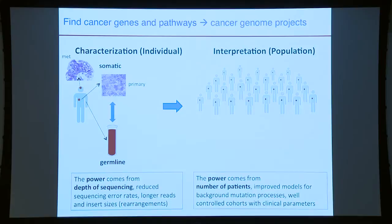Statistically, the power for characterization comes from depth of sequencing, reducing the sequencing error rate, and longer reads and insert sizes — these give more power to detect events. The power to answer interpretation questions comes from the number of patients: the more patients we have, the more power we have to find these events.